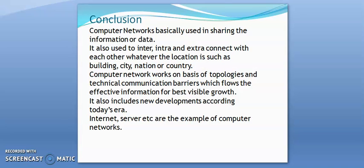In conclusion, computer networks are basically used for sharing information and data. They are also used to connect intra, inter, and extra networks regardless of location — whether a building, a city, a nation, or a country. Computer networks work on the basis of topologies and technical communication methods to enable effective information flow, and include new developments such as the internet and servers.